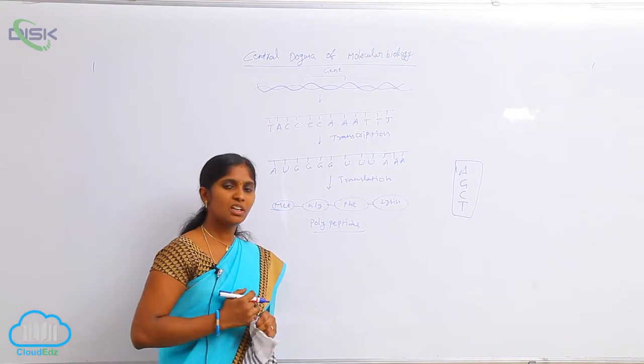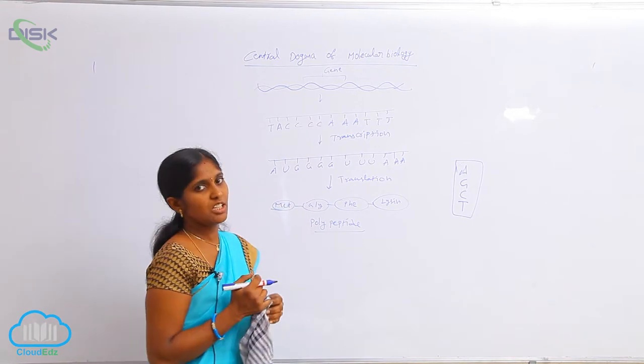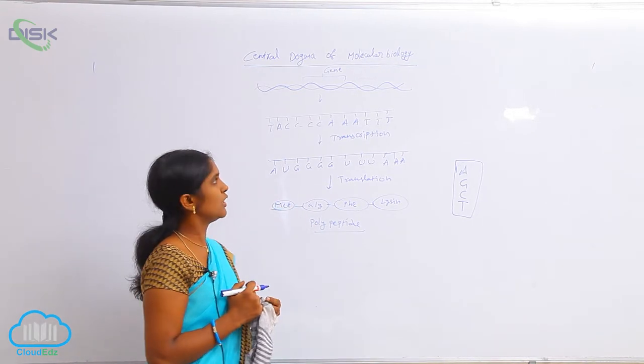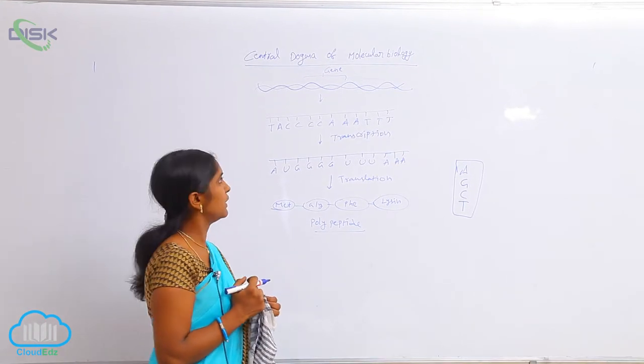Whereas in RNA you see A, G, C, U are present in RNA. So here the gene, the gene is the functional unit. The gene can express some phenotypic or specific phenotypic characters.